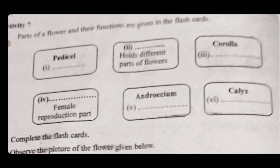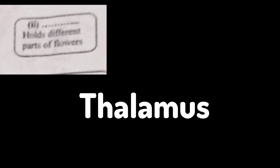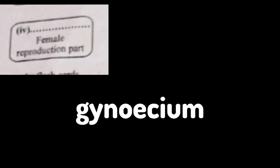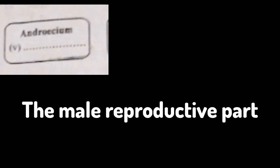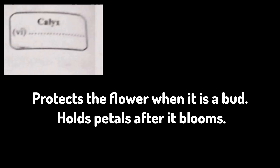Activity Seven: parts of a flower and their functions are given in the flashcards — complete the flashcards. The pedicel connects the flower with the plant. The thalamus holds different parts of the flower. The corolla refers to the petals of the flower. The Gynoecium is the female reproductive part. The Androecium is the male reproductive part.